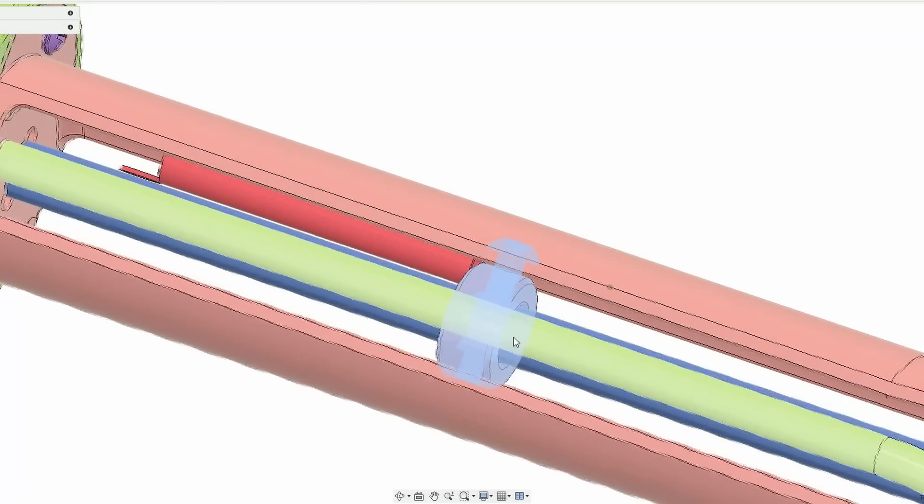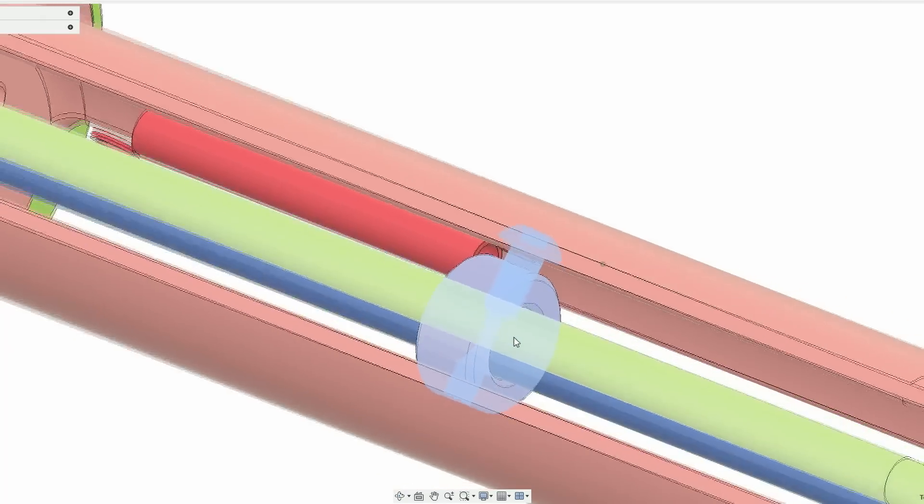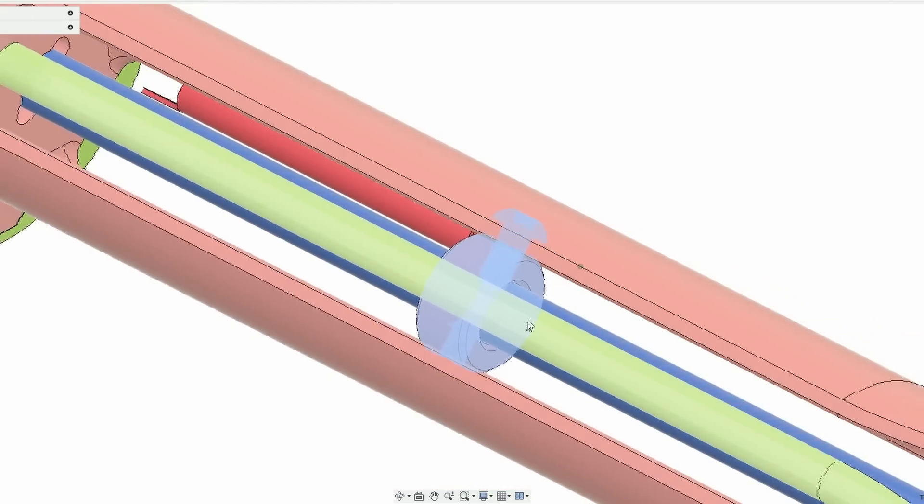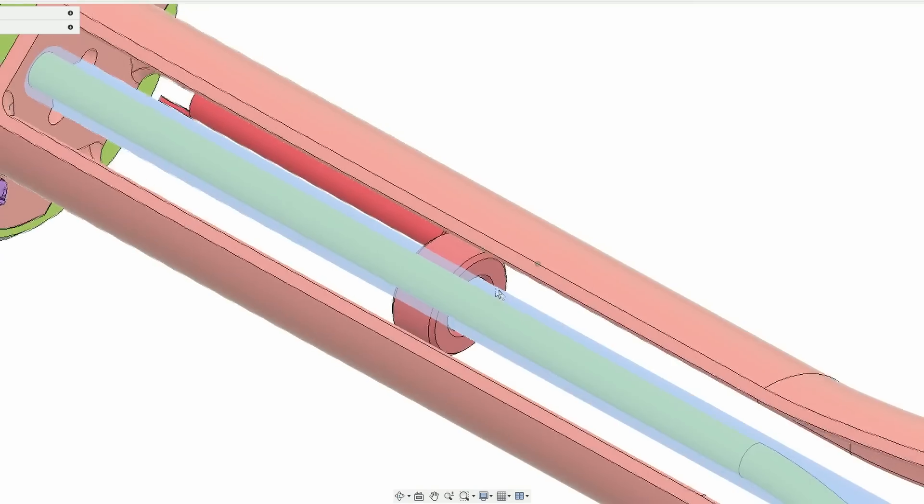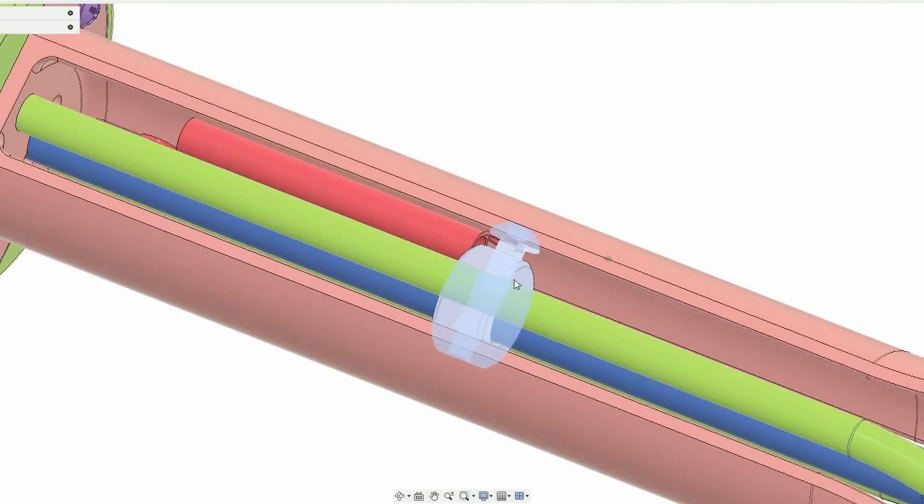I modeled a simple shaft collar that will ride on the rod. The screws that fix the collar to the rod will also be the mounting points for the wrist and hand springs, so I can tension or relax the springs just by adjusting the shaft collar.